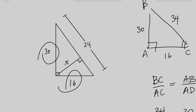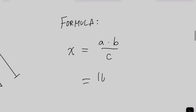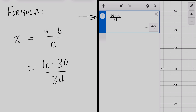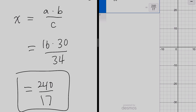The legs are 16 and 30, and the hypotenuse is 34. So it's 16 times 30 divided by 34. Let's pull up Desmos — once you've plugged it in, get the exact answer by pressing the fraction button. So 240 over 17 is our answer. Did you see how much faster that was than doing all the similar triangle stuff?